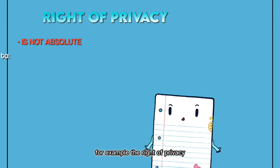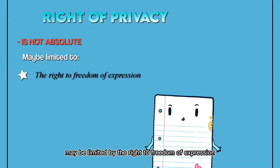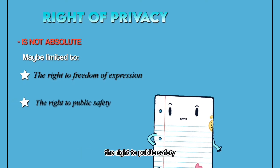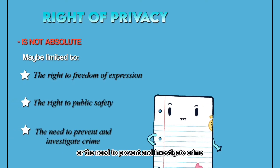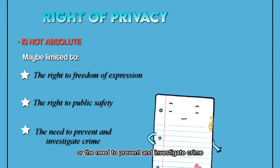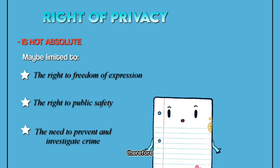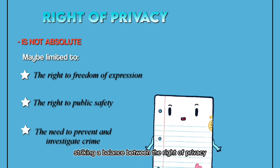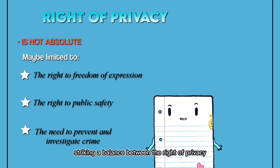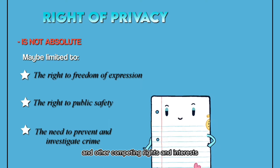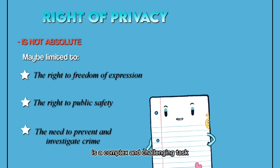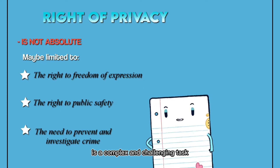For example, the right of privacy may be limited by the right to freedom of expression, the right to public safety, or the need to prevent and investigate crime. Therefore, striking a balance between the right of privacy and other competing rights and interests is a complex and challenging task.